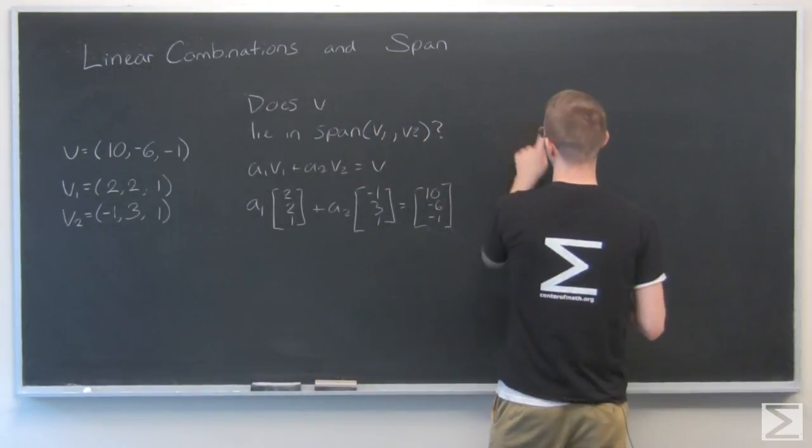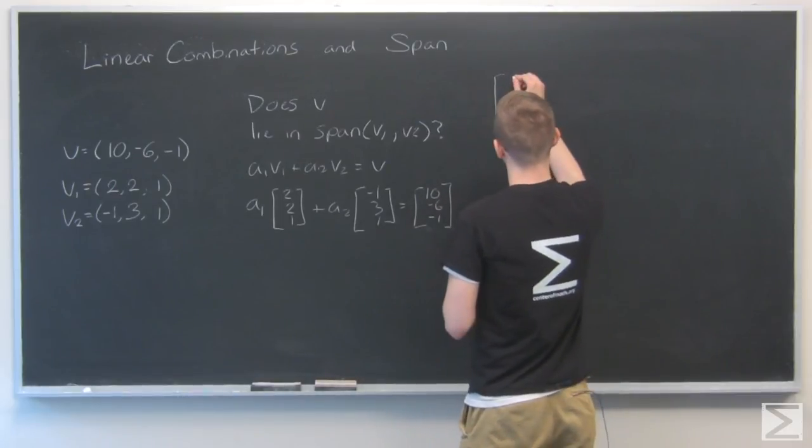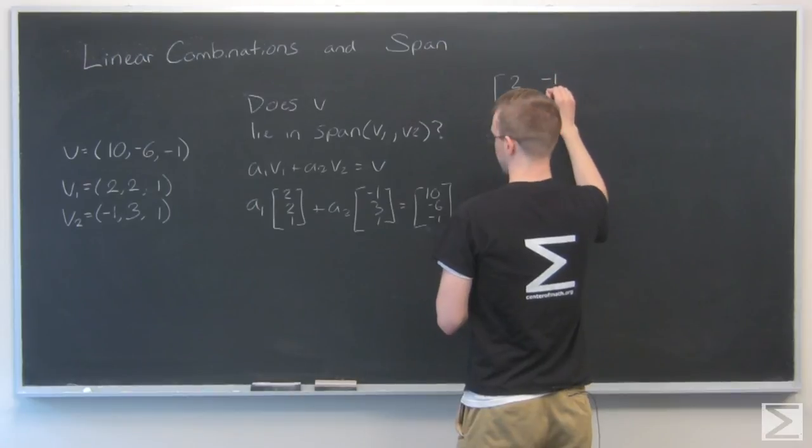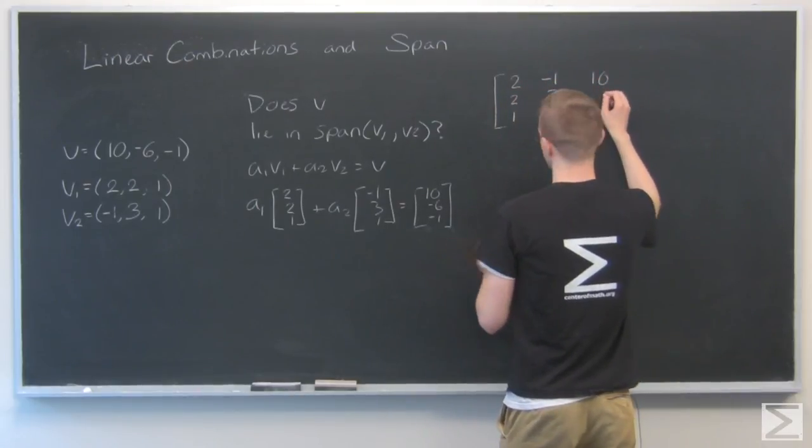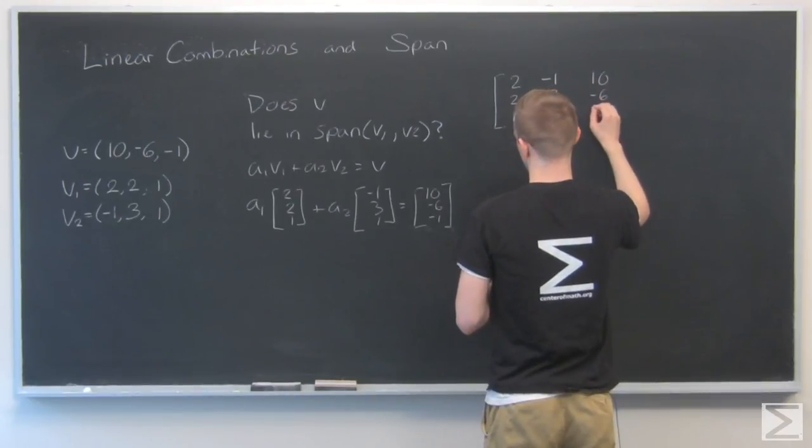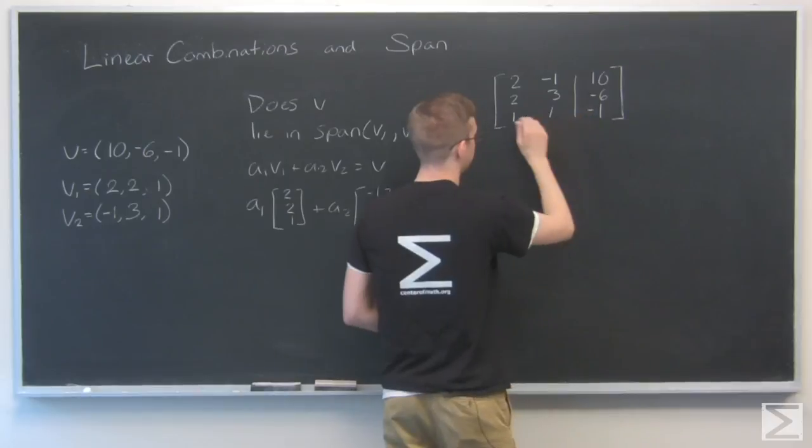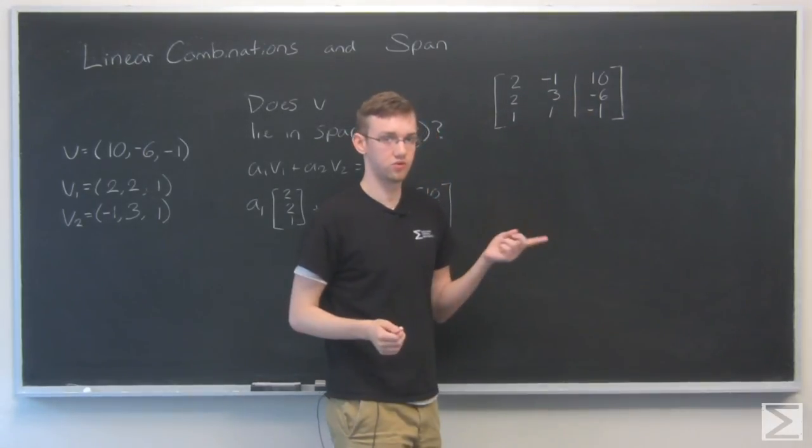This we'll go into what we recognized before as our coefficient matrix. But now we're using it to find the result of these vectors. I put my line down the middle to show that there's an equality. Now we just want to find the reduced row echelon form of that.